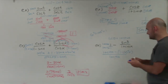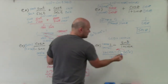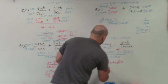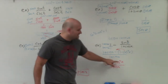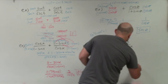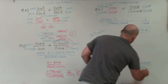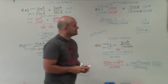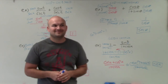Distributing the negative gives negative 1 plus cosine squared of x. Since 1 minus 1 equals 0, I'm left with cosine of x plus cosine squared of x all over 1 plus cosine of x. Factoring out cosine of x from the numerator gives cosine of x times 1 plus cosine of x, divided by 1 plus cosine of x. The 1 plus cosine of x terms cancel, leaving our final simplified expression of cosine of x.